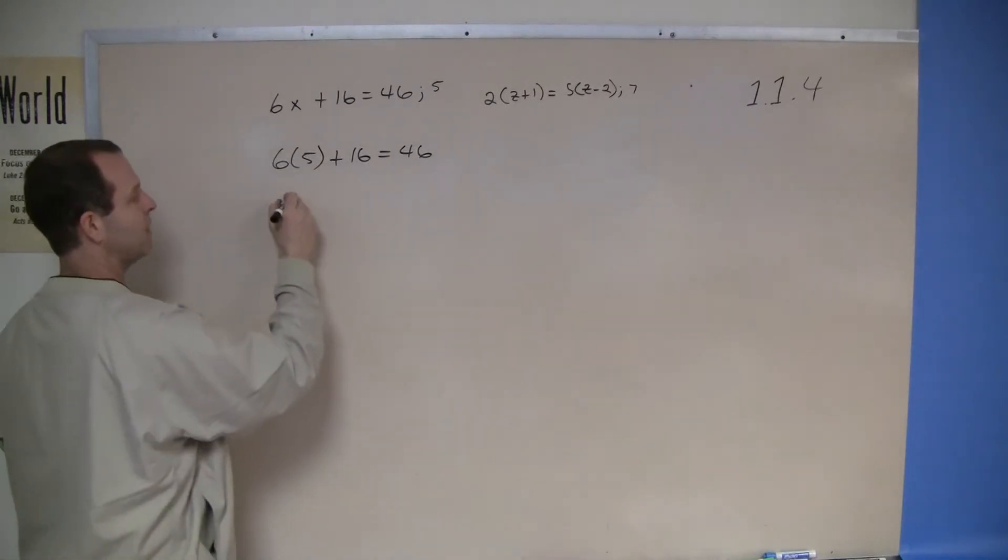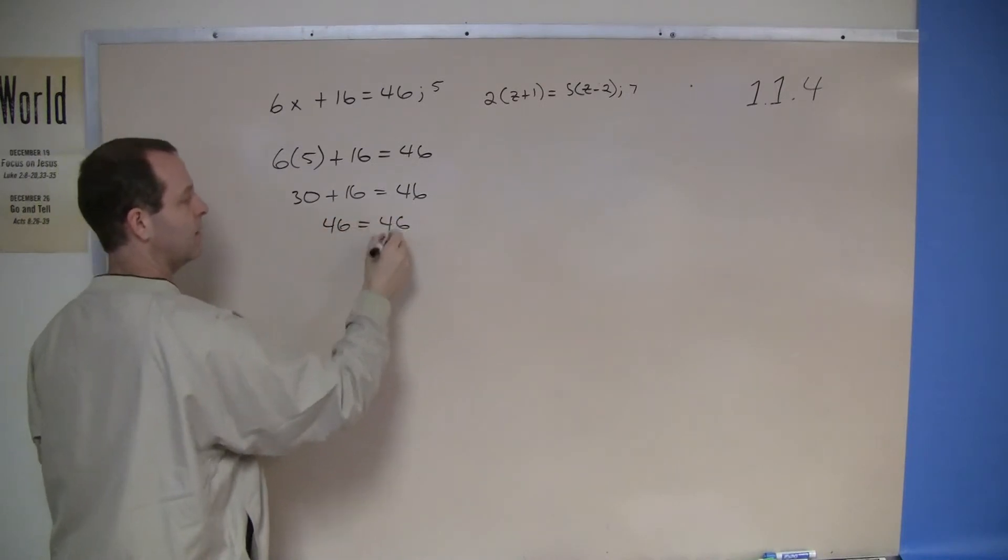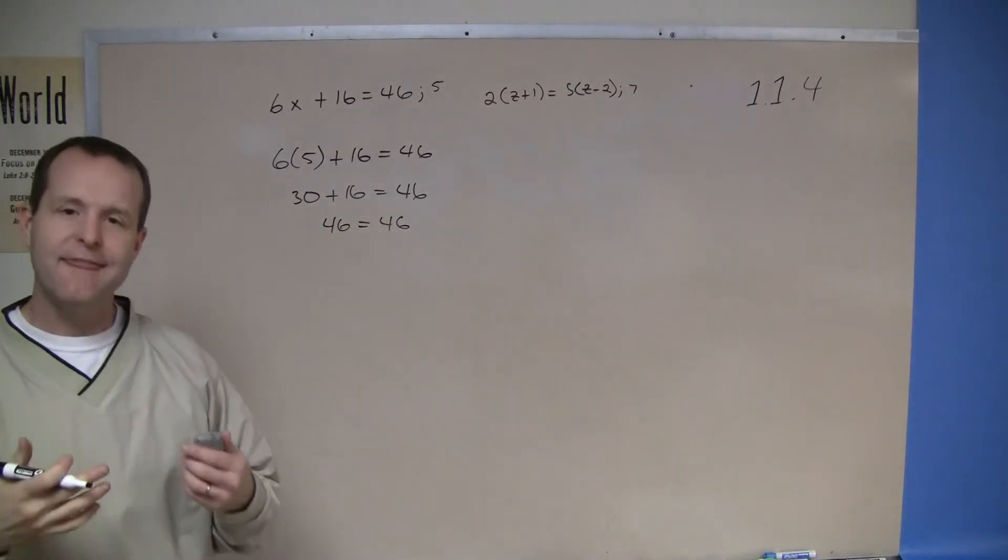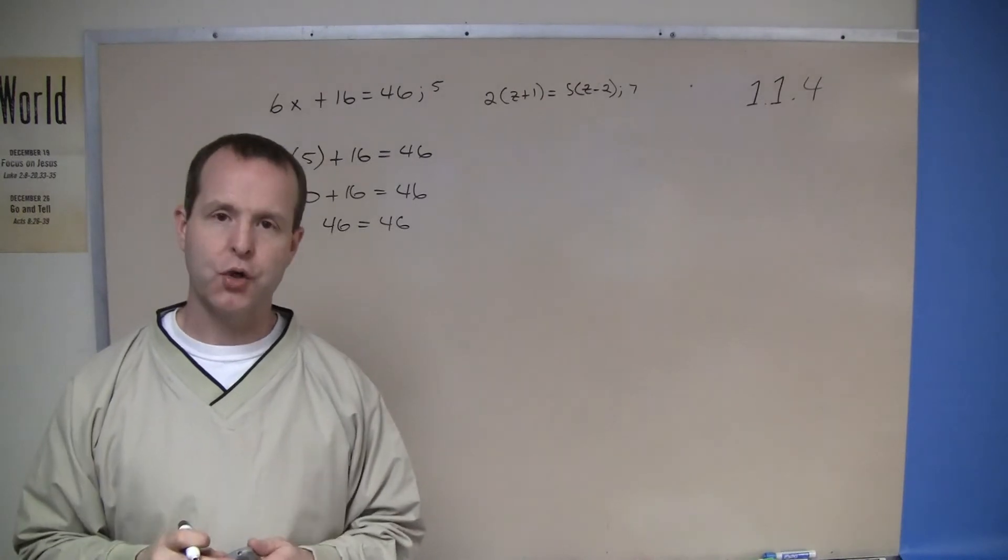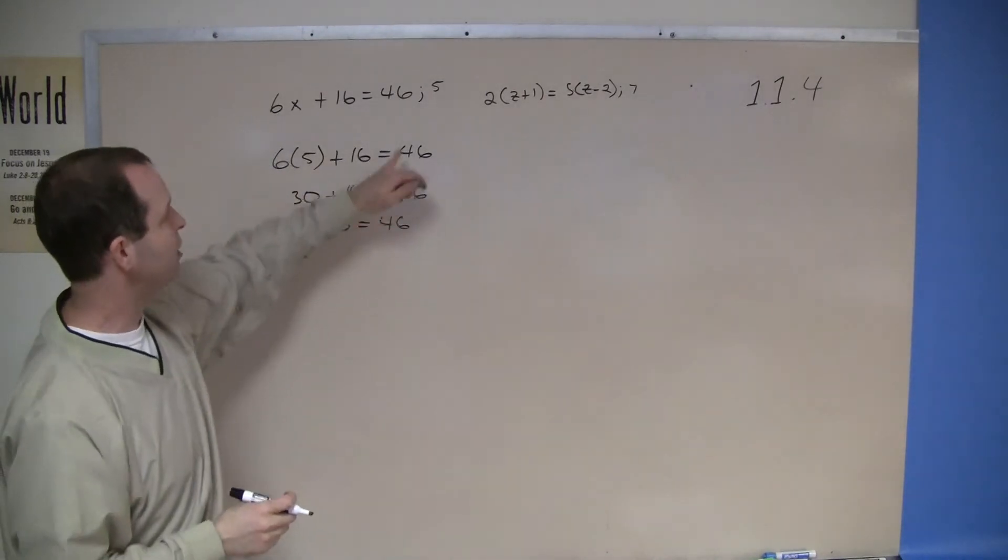6 times 5 is 30 plus 16 equals 46. 30 plus 16 equals 46. 46 equals 46. That example is true. It is true for that particular variable that we chose, that 5.